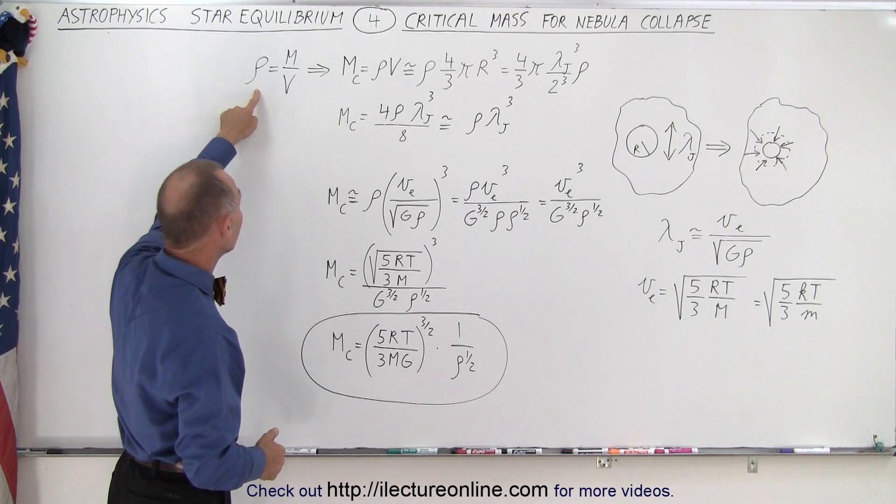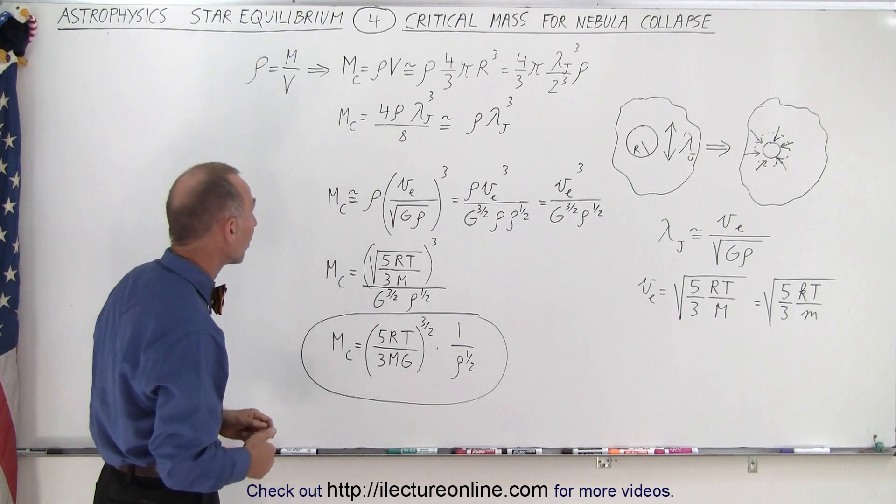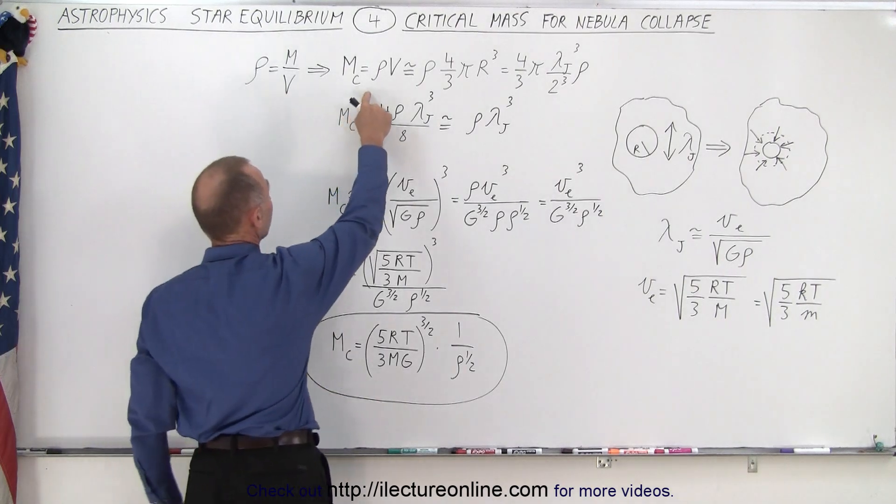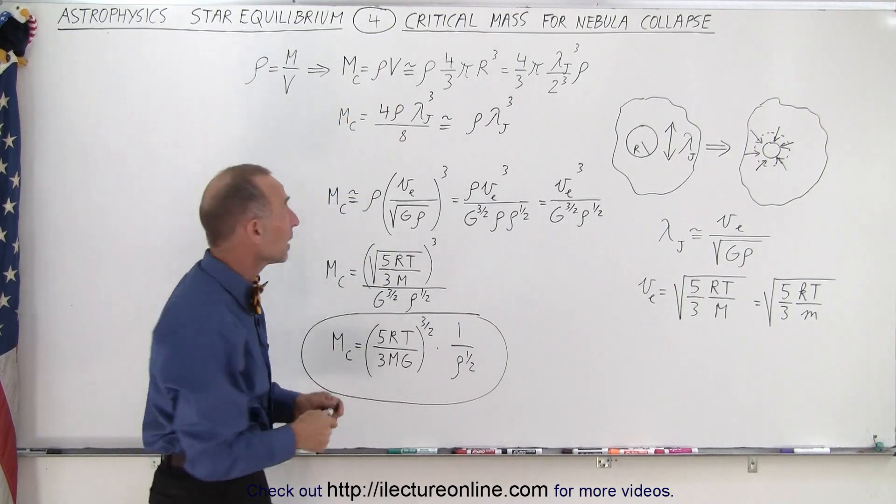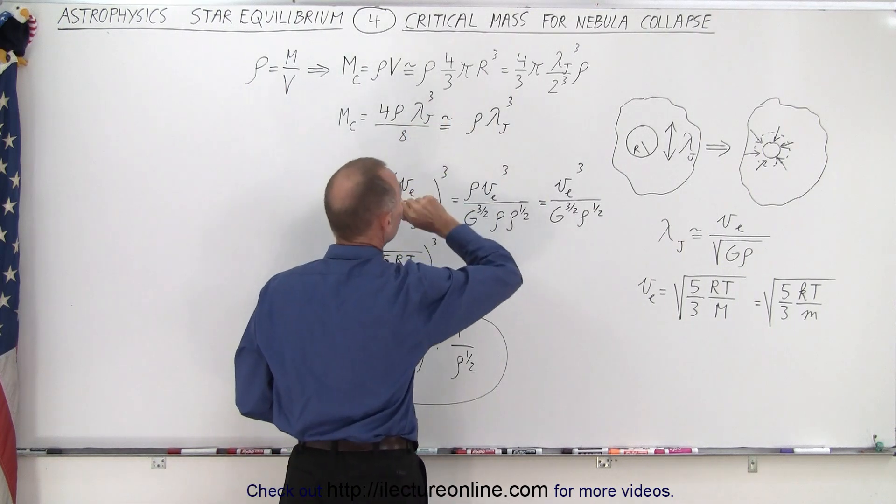Again, we use the equation where the density is the ratio of mass divided by volume, or the mass is the product of density times the volume. The volume, of course, being 4/3 π r³.